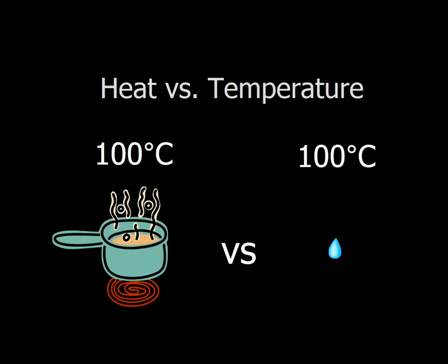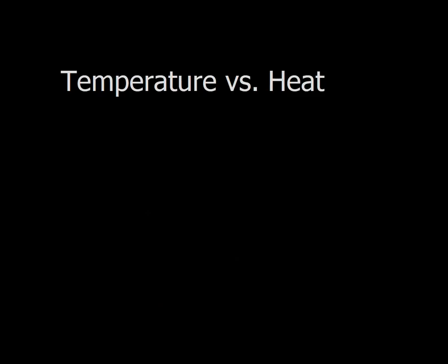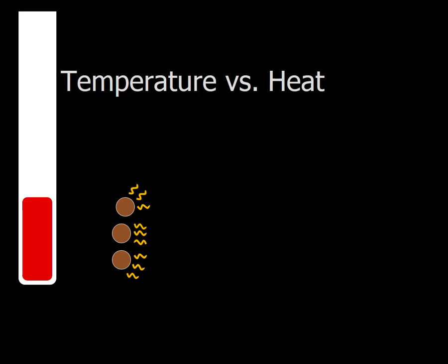Temperature, on the other hand, does not have to do with the amount of matter. So the way a thermometer works is atoms moving around bump into the bulb of the thermometer. The liquid inside heats up and expands. And that's what we know as temperature. So temperature is related to the speed at which the particles are moving around.